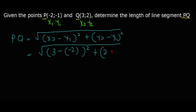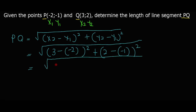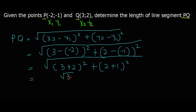Then y2 minus y1: 2 minus, and because it's negative we use brackets. From here we simplify: 3 minus negative 2 all squared, plus 2 minus negative 1 all squared. From the calculator, this gives the square root of 34, which is approximately 5.83 units.